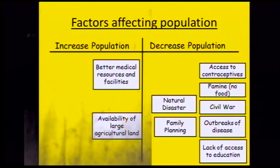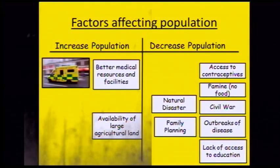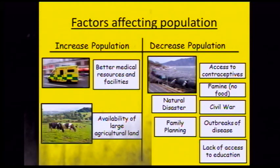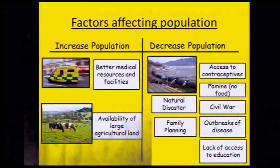There are lots of factors that affect population, whether it increases or decreases. The first reason for increase is better medical resources and facilities, so people can access better healthcare. Another reason is a large availability of agricultural land, allowing us to grow crops to sustain ourselves. Reasons for decrease include access to contraception, famine — which means no food so people die — civil war, outbreaks of disease, and natural disasters, all of which reduce population.